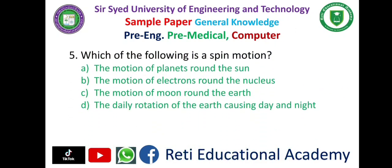Question number five: Which of the following is spin motion? A. The motion of planets round the sun, B. The motion of electrons round the nucleus, C. The motion of the moon round the earth, D. The daily rotation of the earth causing day and night. The correct answer is D: the daily rotation of the earth causing day and night.